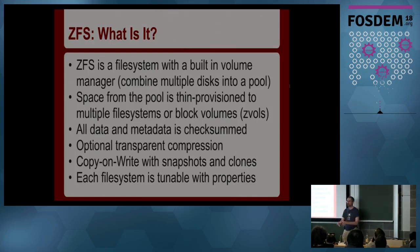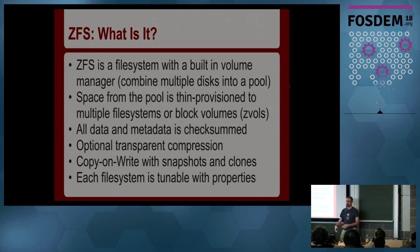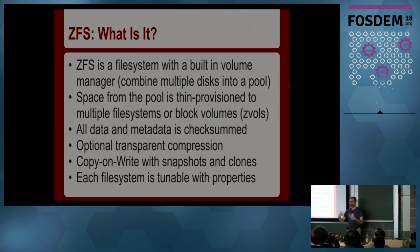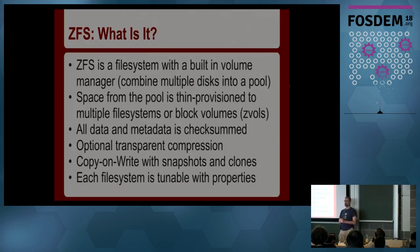Importantly, ZFS stores a checksum with every data block written to disk, so when it reads data back it can detect if the disk has flipped a bit, read from the wrong sector, or if data is not what you originally wrote. Because it's also the software RAID implementation — whether you have a mirror or RAID-Z (which is RAID 5, 6, or even triple parity) — it can read from another block and recover the data. It also solves the split-brain problem with a mirror: if the same sector on two halves has different data, the checksum tells you which one is correct, and you can replace the incorrect one.